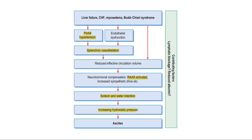This is a flowchart showing how the peripheral arterial vasodilatation theory causes ascites in these conditions. First, there are conditions causing portal hypertension or endothelial dysfunction. Splanchnic vasodilation occurs, reducing the effective circulation volume. The RAAS system is activated, causing sodium and water retention and increasing hydrostatic pressure, hence causing ascites.